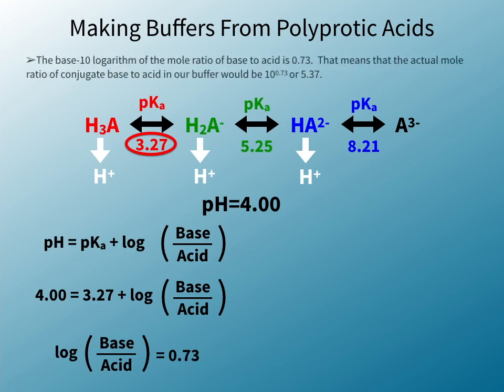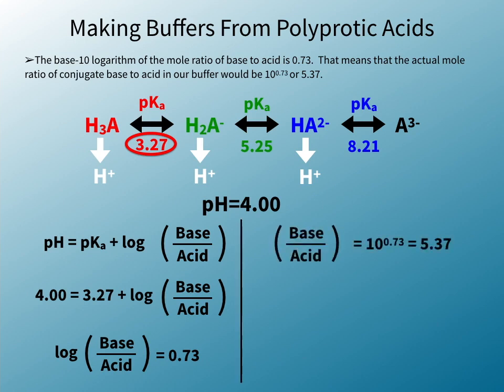The base 10 logarithm of the mole ratio of base to acid is 0.73. That means that the actual mole ratio of conjugate base to acid in our buffer would be 10 raised to the 0.73, or 5.37.